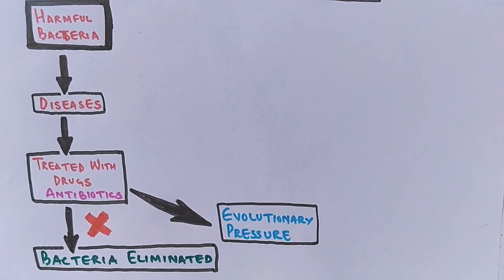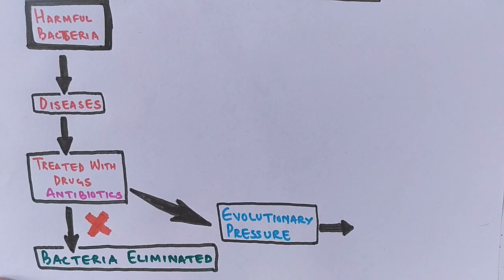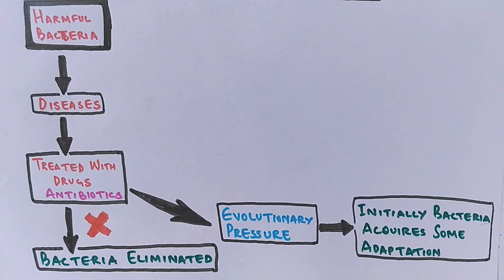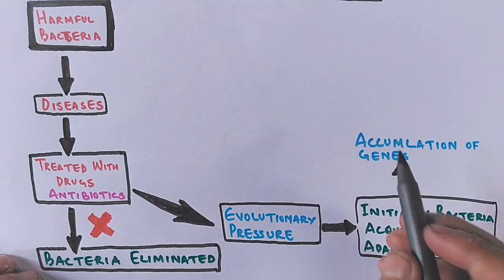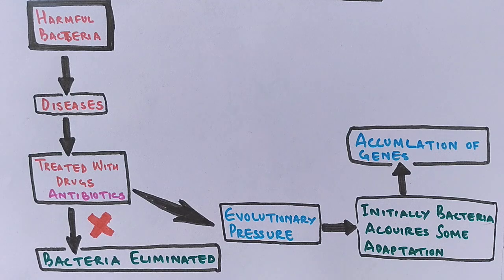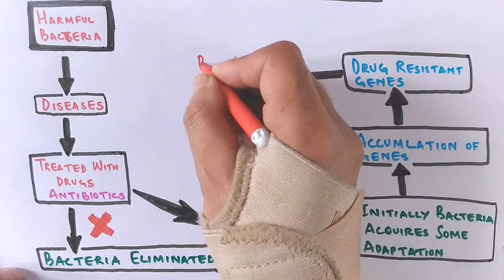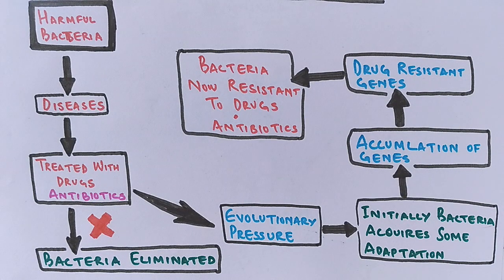There is evolutionary pressure on bacteria. Initially, bacteria develop some adaptation towards the antibiotics. After developing initial adaptation, there is an accumulation of genes — specifically genes that produce products which counteract the effects of antibiotics. These drug-resistant genes are then passed on to the next generation through inheritance, and finally the bacteria become resistant to antibiotics. This is the overview of how antibiotic resistance occurs.